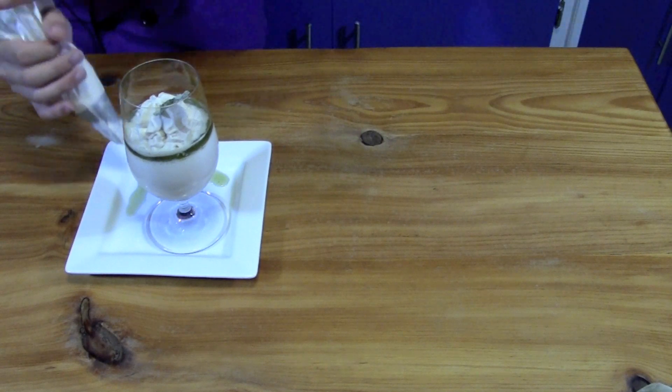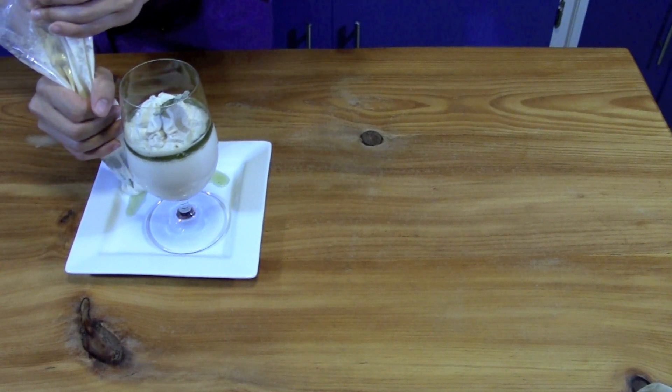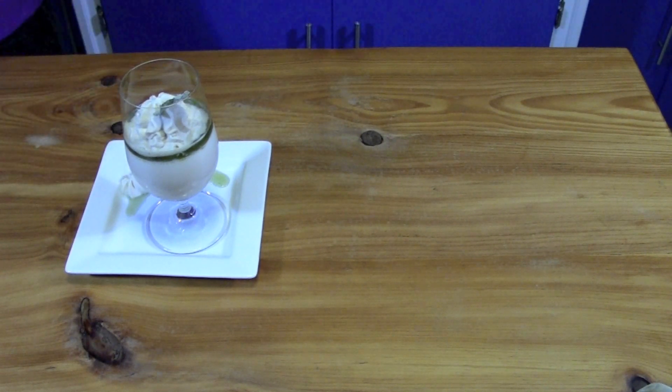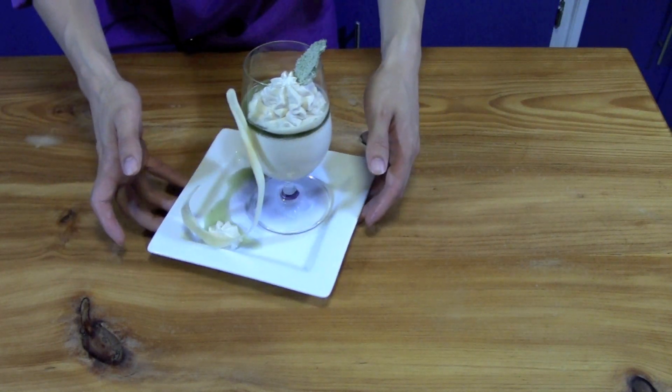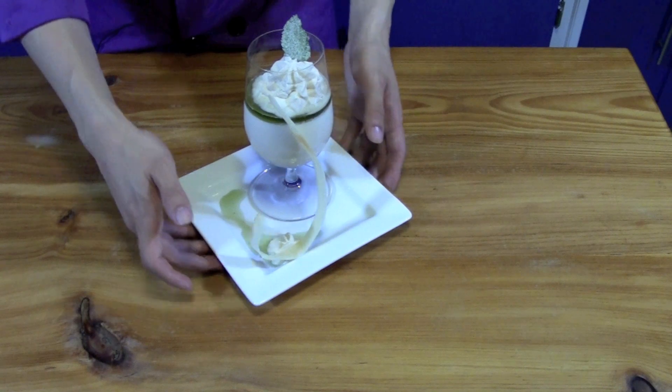And then if you're going to use a tuile like I am, pipe another dot of Chantilly. Using the Chantilly in the glass supports your tuile. And that's it. There's your mint julep dessert cocktail.